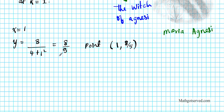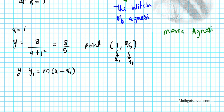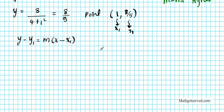We need a point and a slope to use the point-slope equation: y minus y1 equals m times (x minus x1). We already have x1 and y1. What we need now is the slope m. The derivative is the tool that helps us find the slope without using the slope formula directly — we just find the derivative at the specific point.